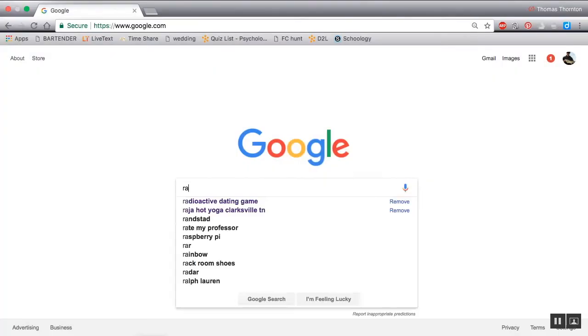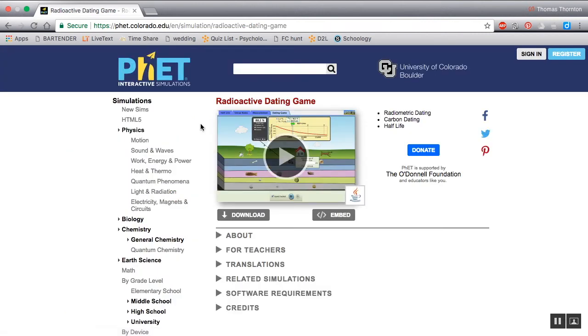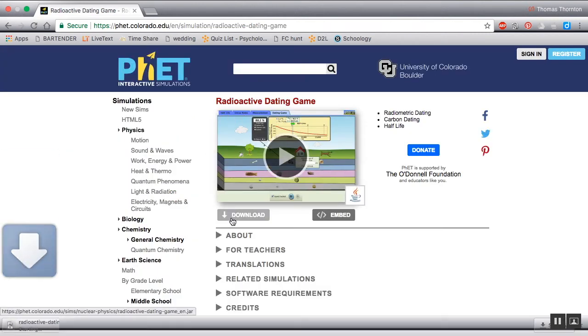The way we're going to find this is we're going to go to Google and type in PhET Radioactive Dating Game or just Radioactive Dating Game. It should be the top link that pops up. From there you will have to download this to your computer.